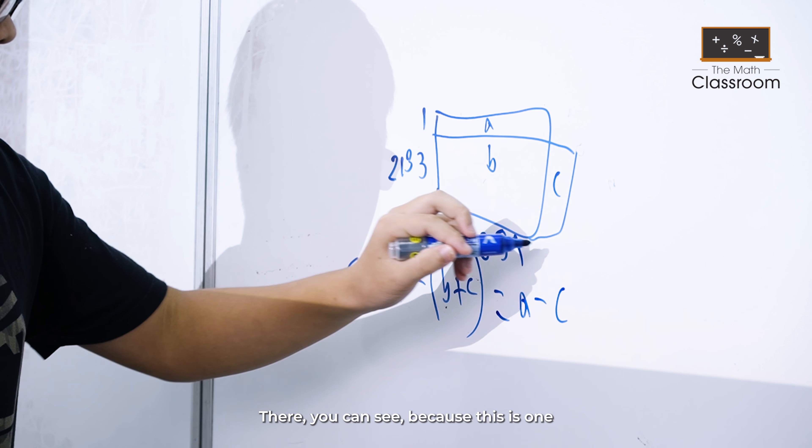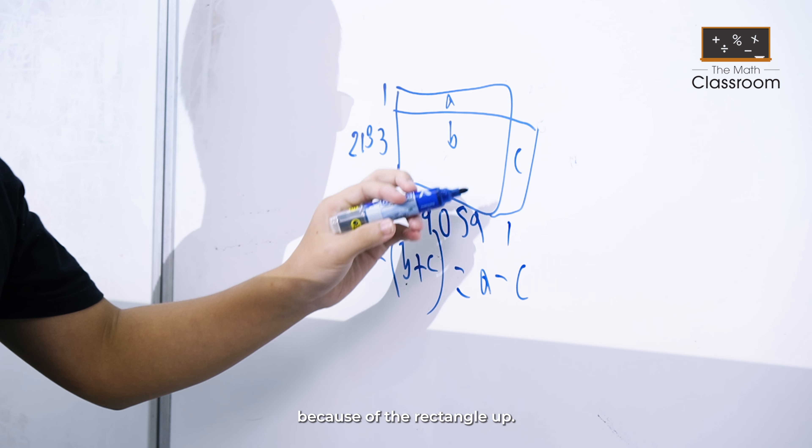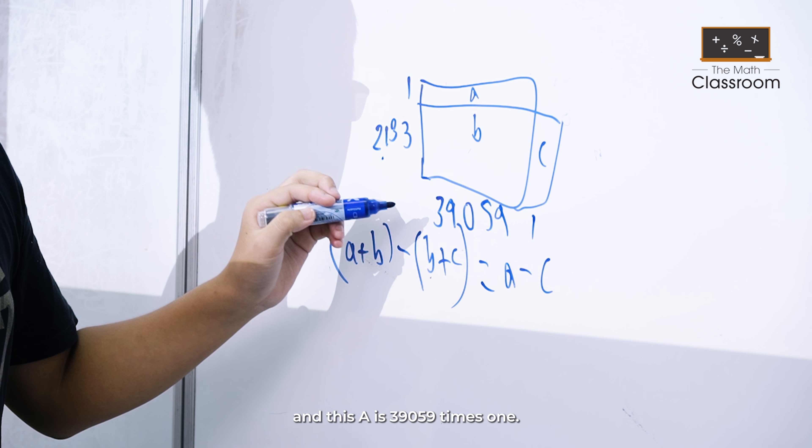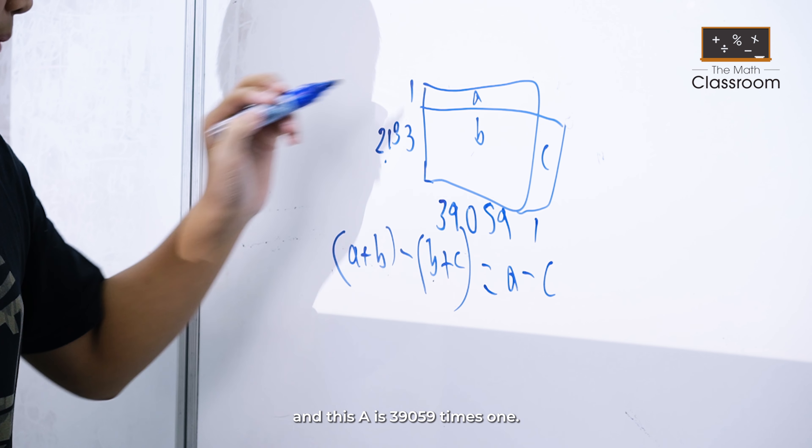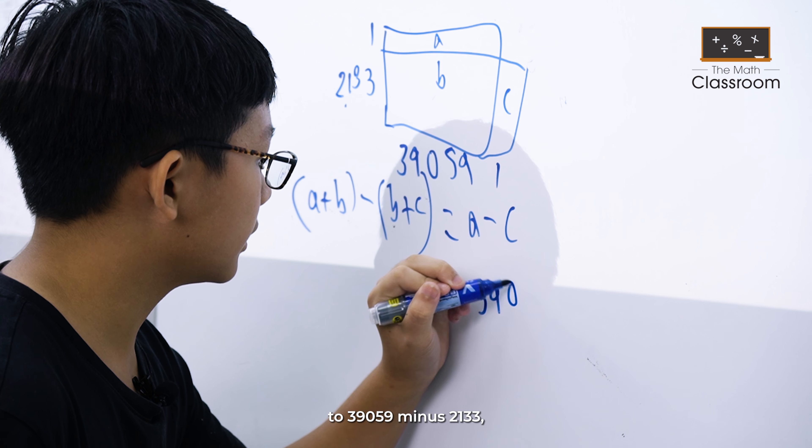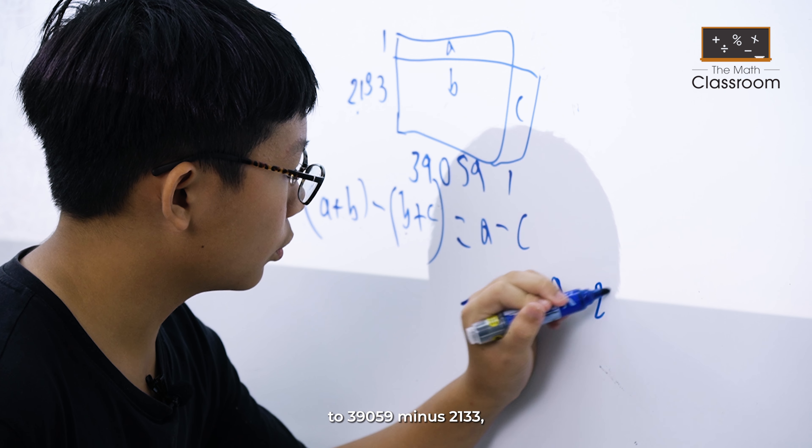Then you can see, because this is 1 because of the rectangle, this C is 2133 times 1, and this A is 39059 times 1. So A minus C basically equals 39059 minus 2133.